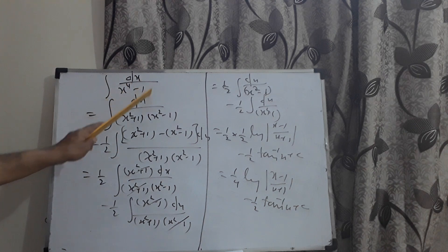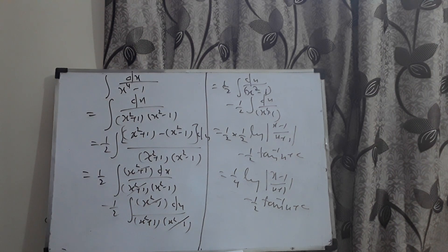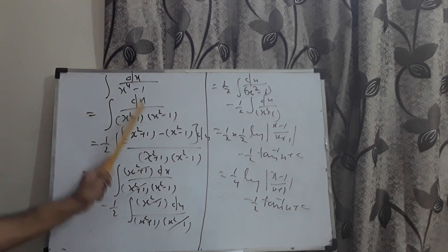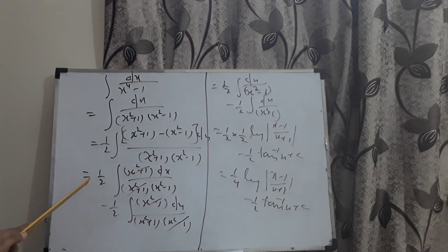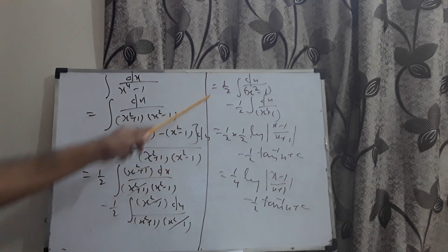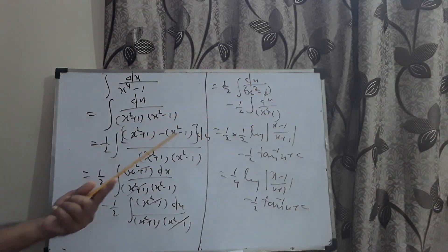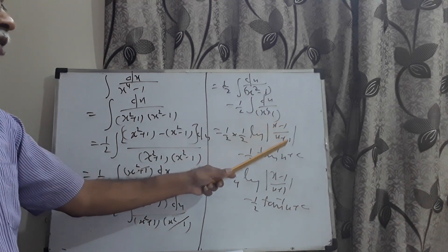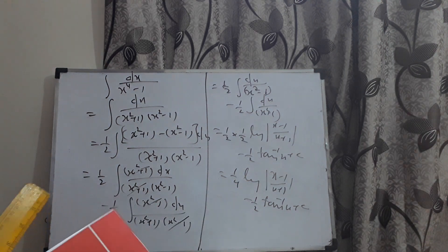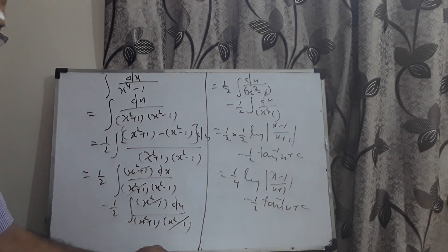To recap: for ∫ dx/(x⁴ − 1), factor the denominator as (x² + 1)(x² − 1), write the numerator as (x² + 1) − (x² − 1), divide by 2 to compensate. Split into two integrals; the respective factors cancel, giving (1/2)∫ dx/(x² − 1) − (1/2)∫ dx/(x² + 1). Applying direct formulae gives the final answer: (1/4)log|(x−1)/(x+1)| − (1/2)tan⁻¹x + C.